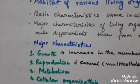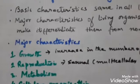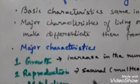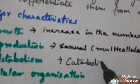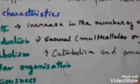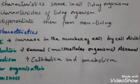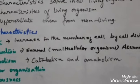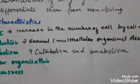The next characteristic is metabolism. Metabolism is the sum total of all the chemical reactions taking place in a living organism. Metabolism is divided into two headings: catabolism and anabolism.